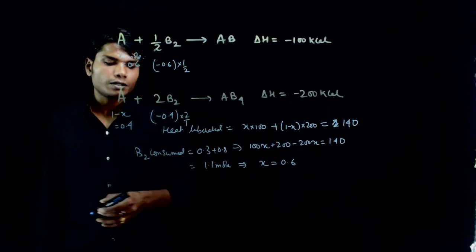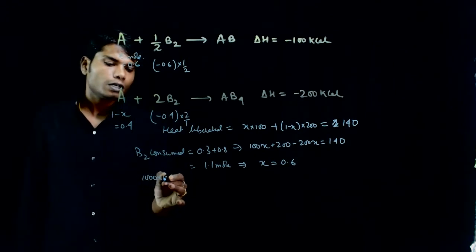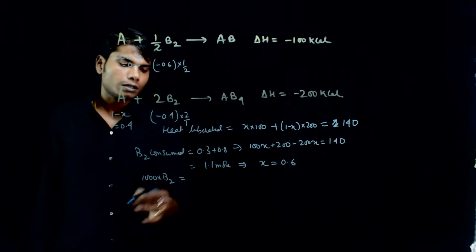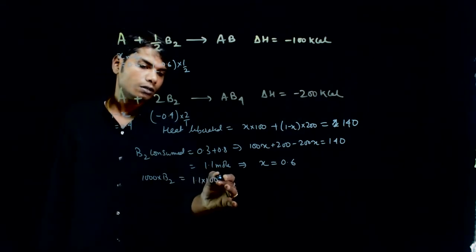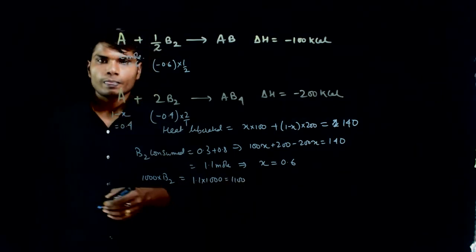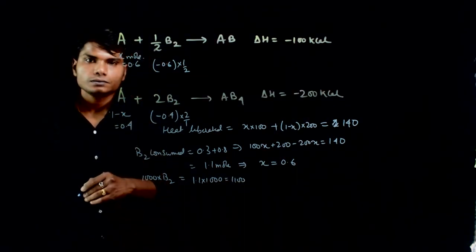And the question says, what is the answer? B2 that was consumed, multiply it by 1000. So how much is it? 1.1 into 1000. So the answer is 1100. Right? Okay, thank you.